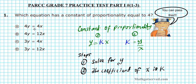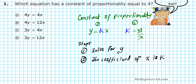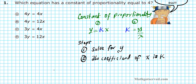We're going to apply these steps to these four options to see which gives us a coefficient of 4. Let's start with option letter a. For option letter a, we have 4y equals 4x.